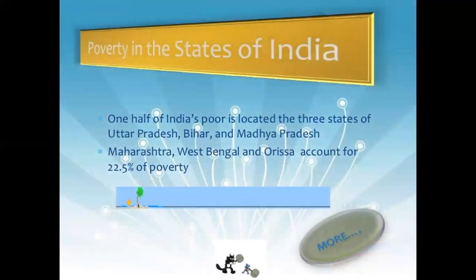Looking at poverty across Indian states, one half of India's poor is located in three states: Uttar Pradesh, Bihar, and Madhya Pradesh. Maharashtra, West Bengal, and Orissa account for 22.5% of poverty.